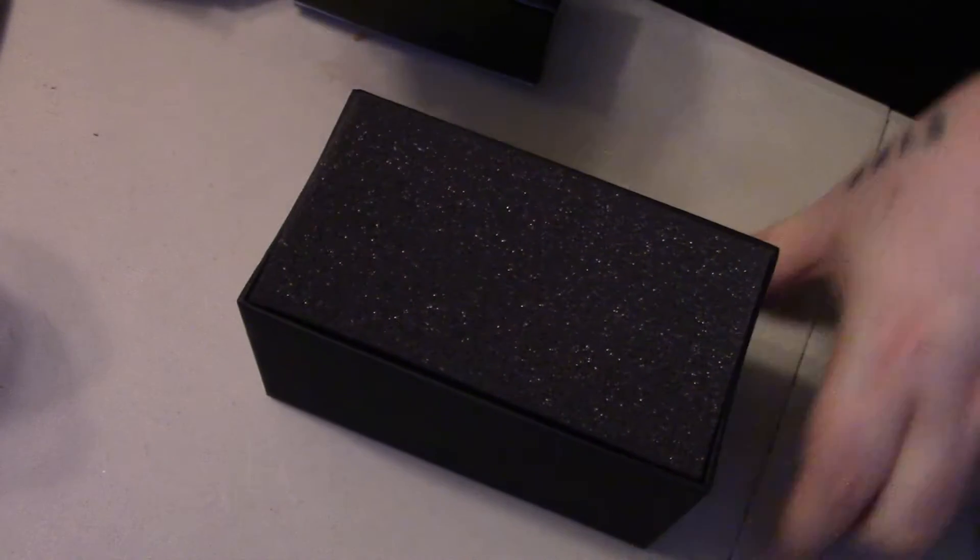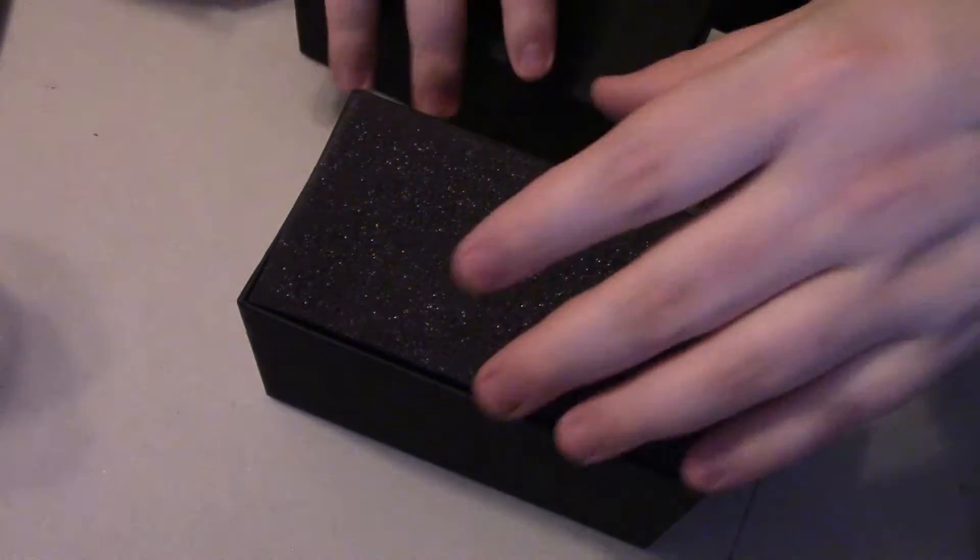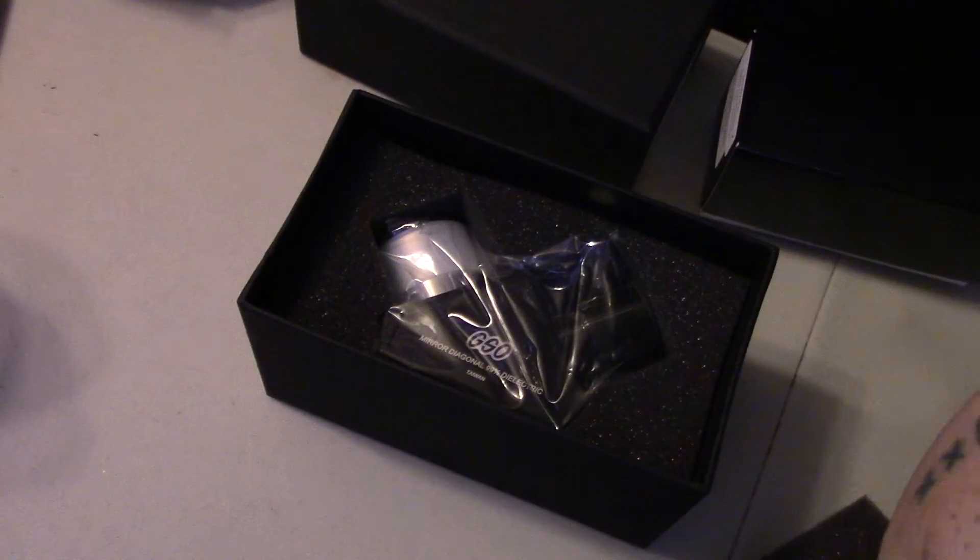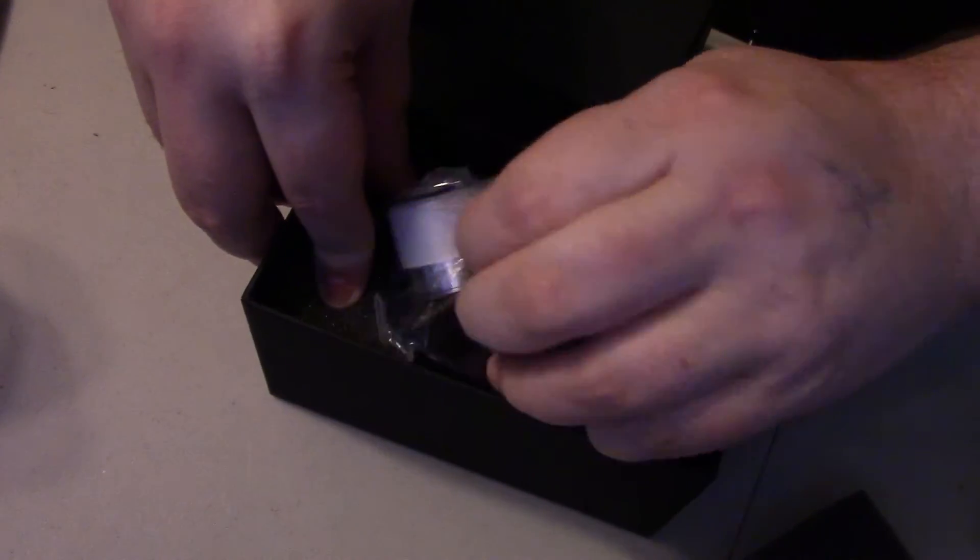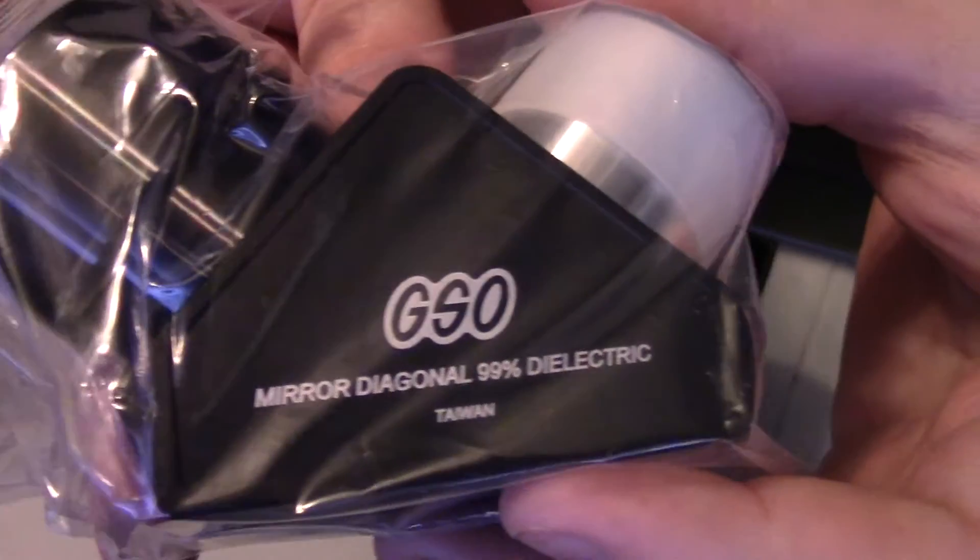I'll give you guys a closer look at what the diagonal looks like. Really nice box by the way. This diagonal is really made with quality. It's a lot better than the diagonal that comes with the telescope.